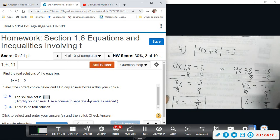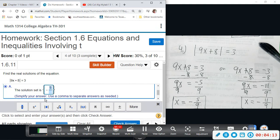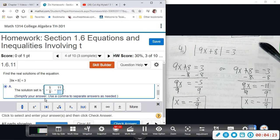We get 9x equals negative 11, and then divide by 9, and we get x equals negative 11 over 9. So again, we get two real solutions for this, and it's always good to go back and just double check and plug in your answer: negative 5 ninths and negative 11 ninths.